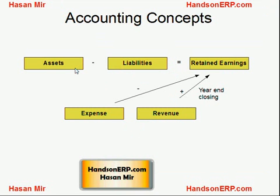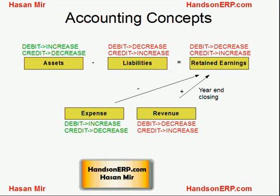Assets are the things of importance that the business owns. Liabilities are basically the loans and any kind of borrowing that the business has against some external entities.